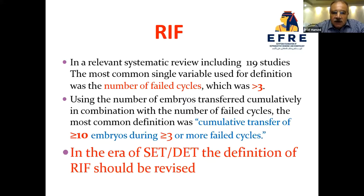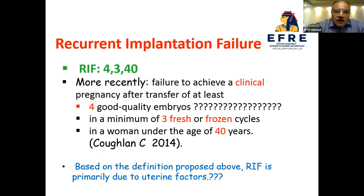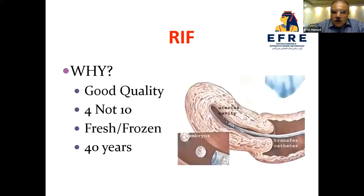In the era of single embryo transfer, the definition of RIF should be revised. More recently it is defined as failure to achieve a clinical pregnancy after transfer of at least four good-quality embryos in a minimum of three fresh or frozen cycles in women less than 40. Why good-quality embryos? Why four, not 10? Why frozen plus fresh? And why age less than 40?